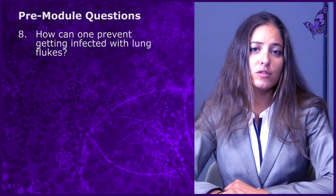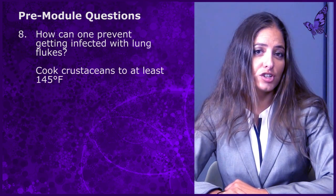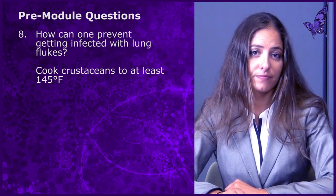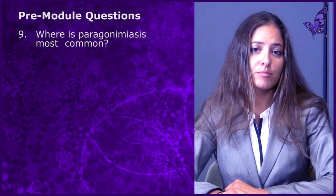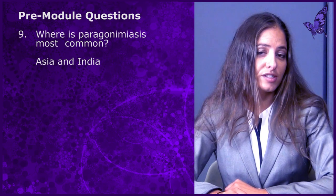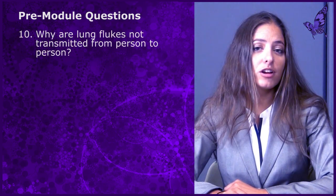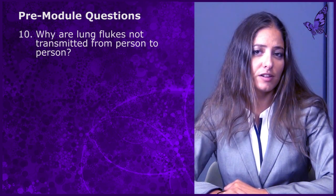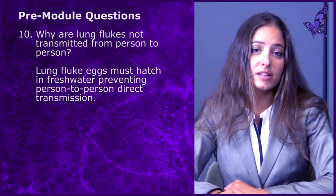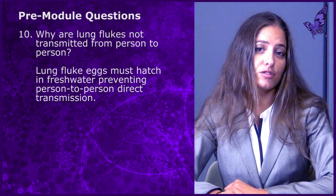Question number eight: how can one prevent getting infected with lung flukes? The answer is to cook crustaceans to a minimum of 145 degrees Fahrenheit. Question number nine: where is paragonomiasis most common? The answer is in Asia and India. Question number ten: why are lung flukes not transmitted from person to person? The answer is that lung fluke eggs must hatch in fresh water, preventing direct person-to-person transmission.